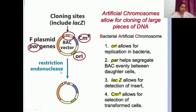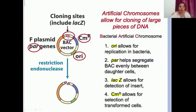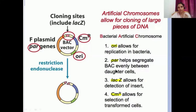Looking at the representation diagram for BAC, there is an origin of replication (Ori) which allows replication in the bacterium. There are also PAR or F-plasmid PAR genes, which help in segregating the BAC evenly between daughter cells. When the host cell multiplies, this F-plasmid part ensures the BAC vector is equally distributed into daughter cells, and continues to be equally distributed as those daughter cells multiply further.